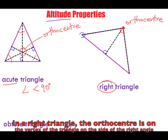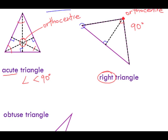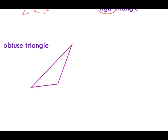In a right angle triangle, the orthocenter is the vertex where the actual 90 degree angle mark lies. Now scrolling down to the obtuse triangle — in an obtuse triangle, one of the angles is greater than 90 degrees. To find the altitudes, we need to extend the sides of the triangle outward.